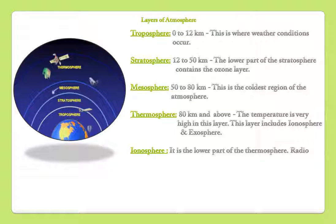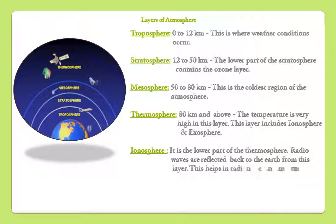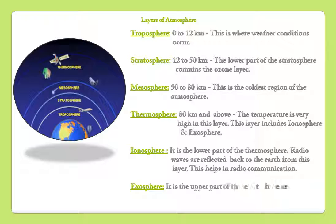Ionosphere: It is the lower part of the thermosphere. Radio waves are reflected back to the earth from this layer. This helps in radio communication.